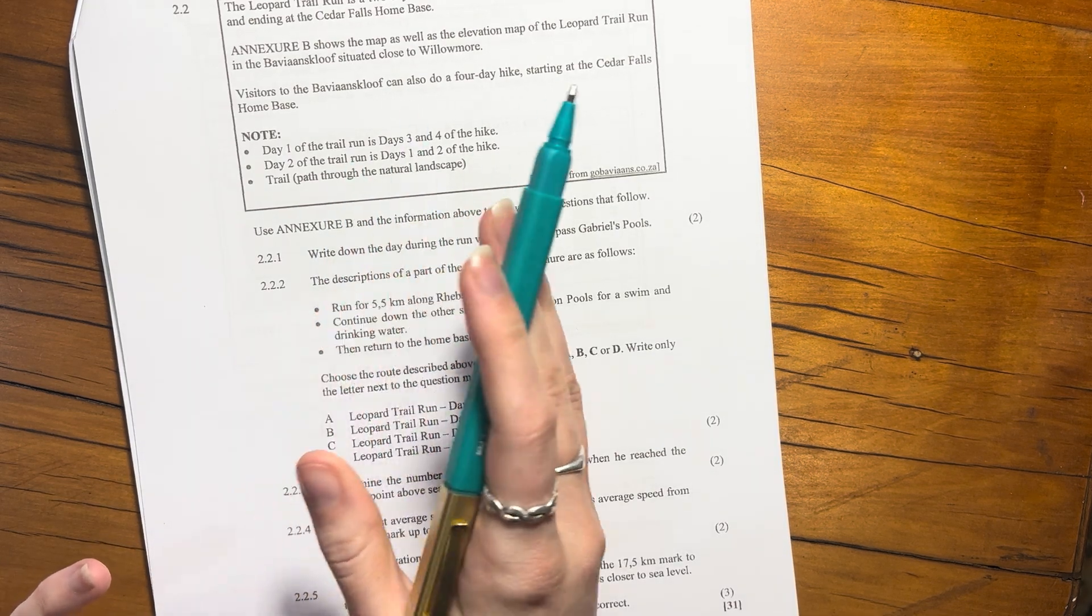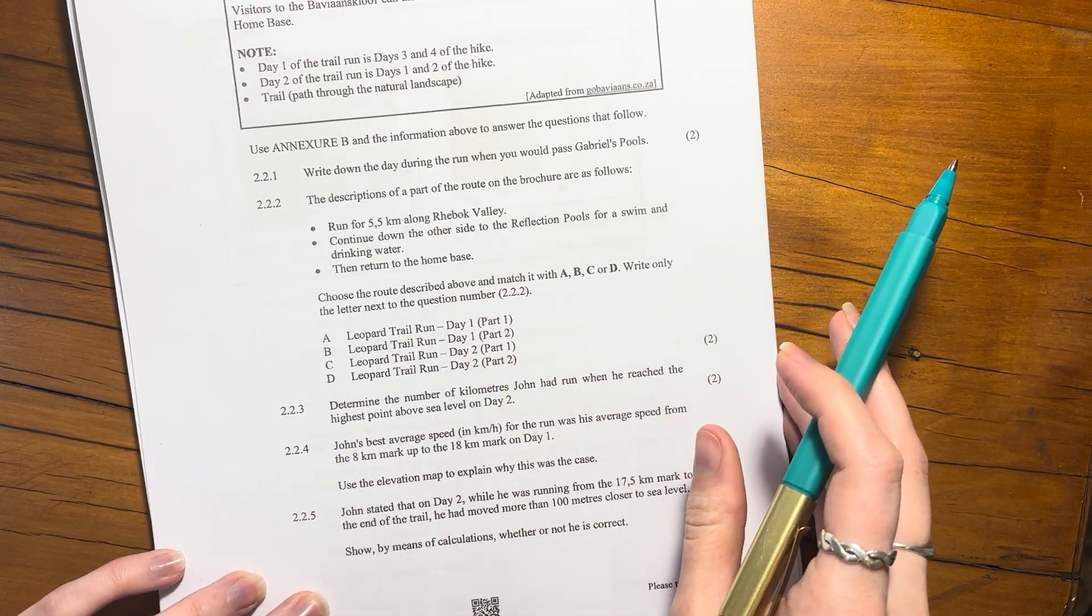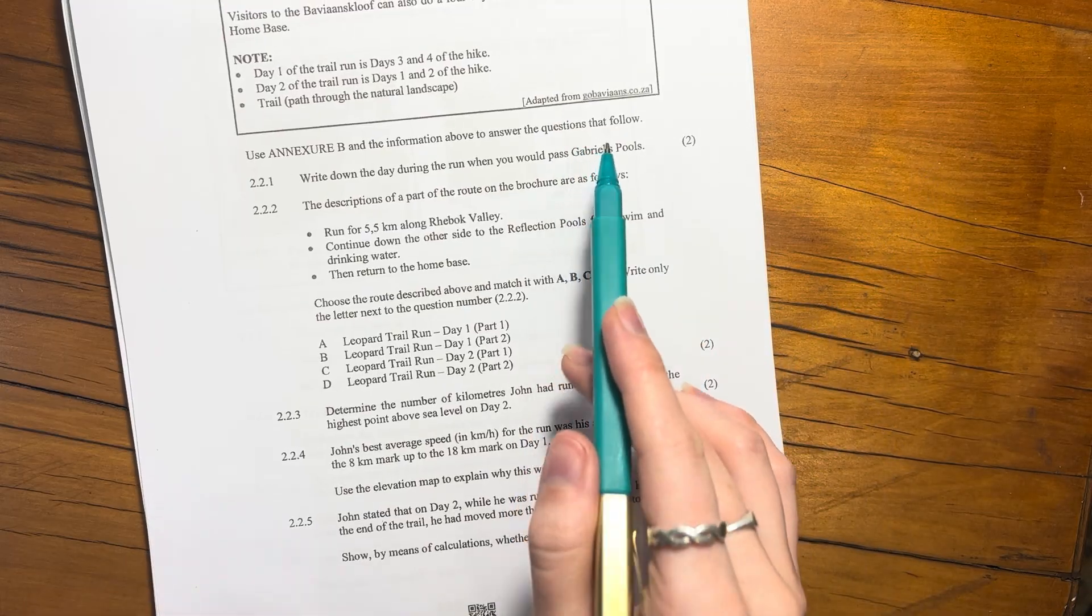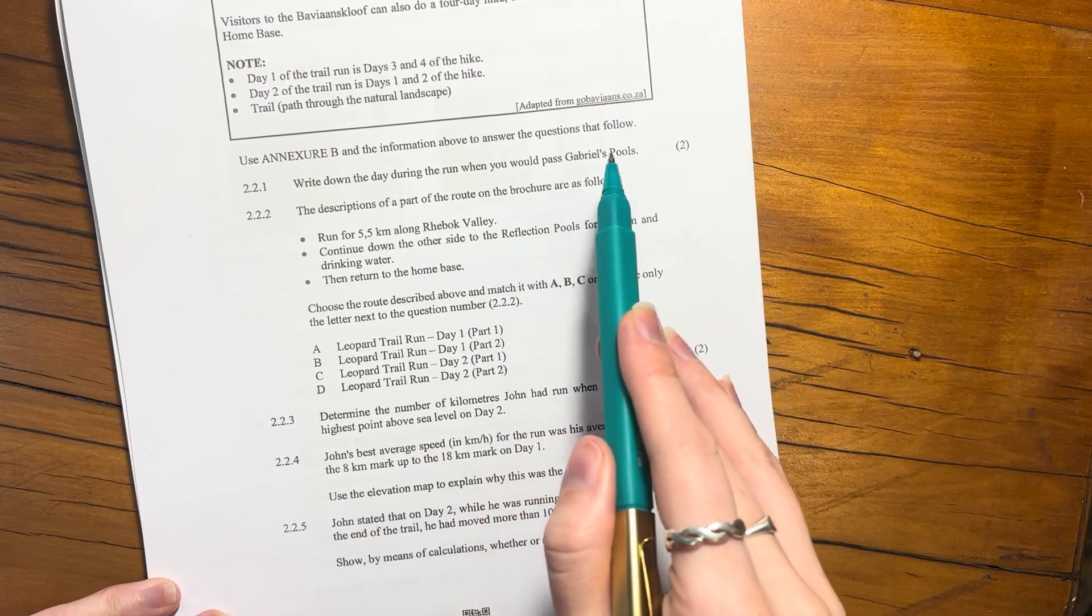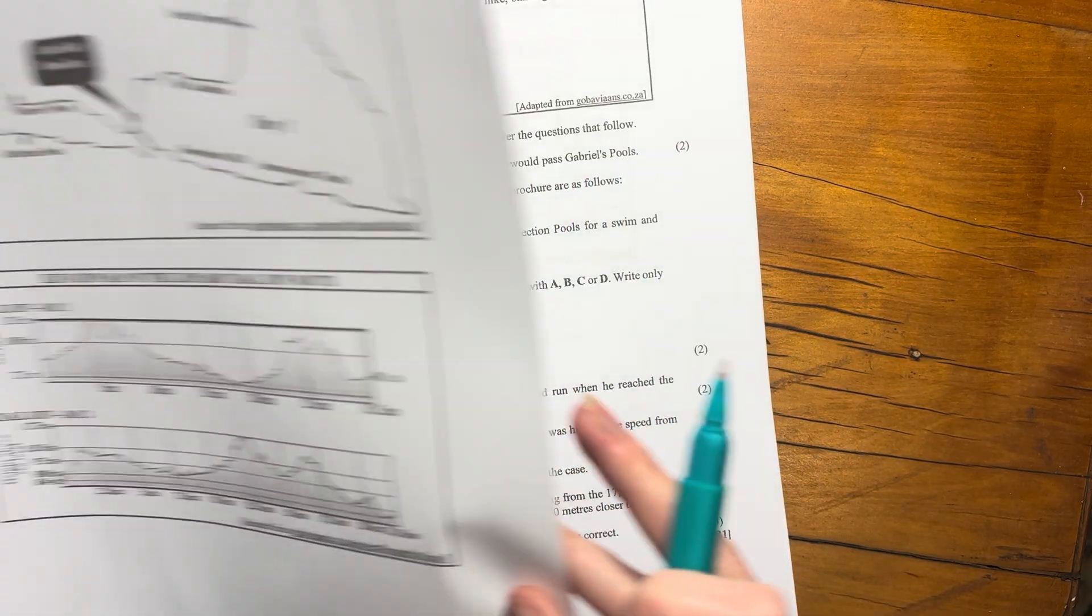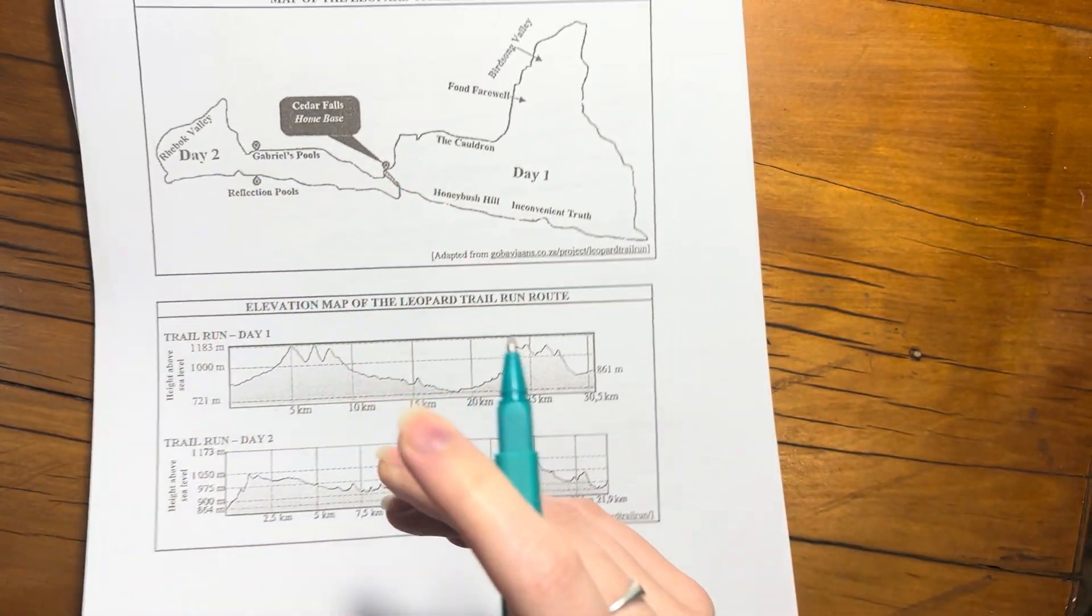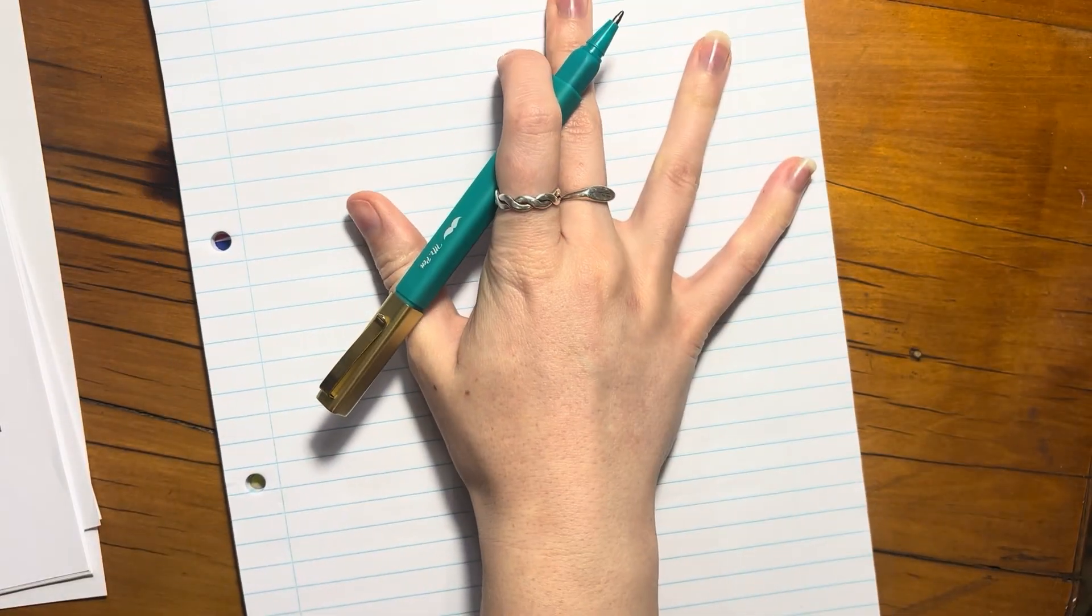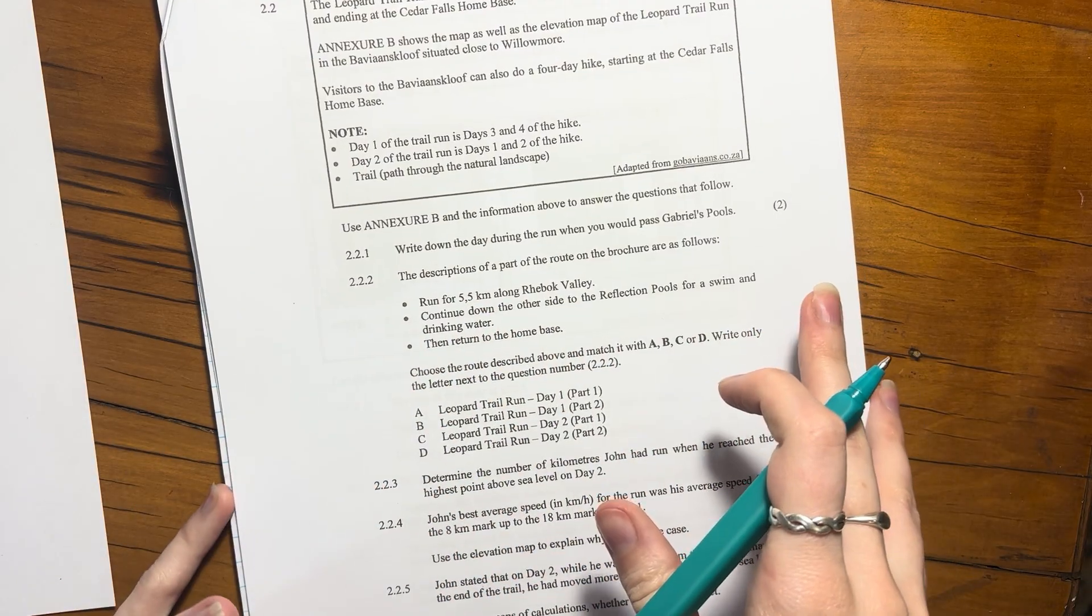Let's look at the questions. Use Annexure B and the answers above to answer the questions that follow. Write down the day during the run when you would pass Gabriel's Pools. Gabriel's Pools is over here, and it says day two. This is pretty simple, we can just say day two. That was a pretty nice start to our question. It does say of the run, so just be careful there.